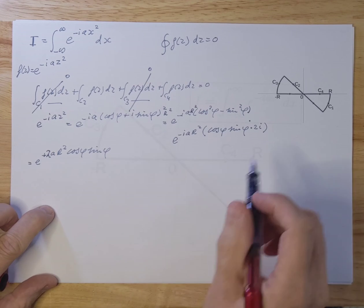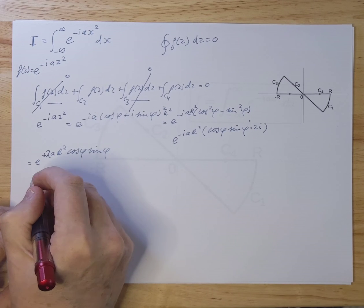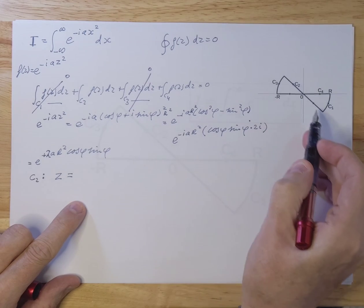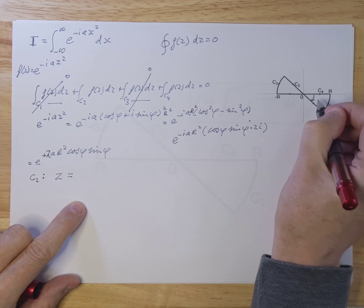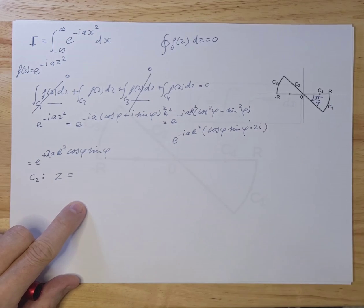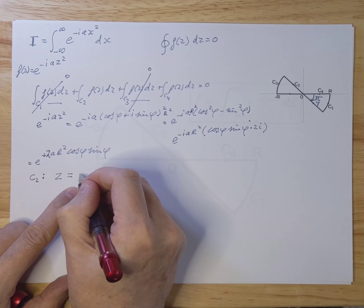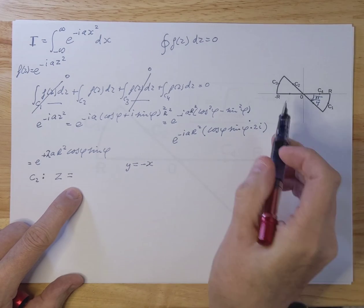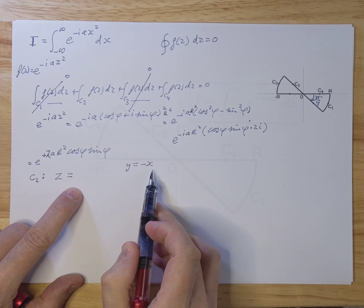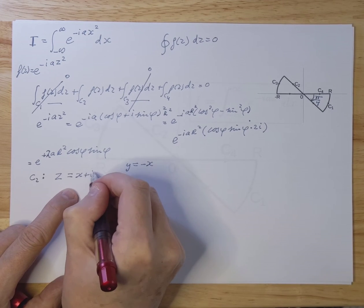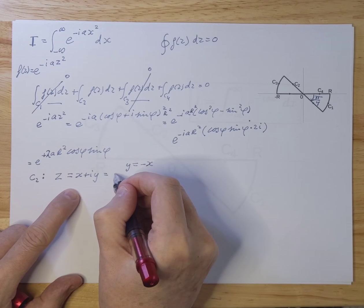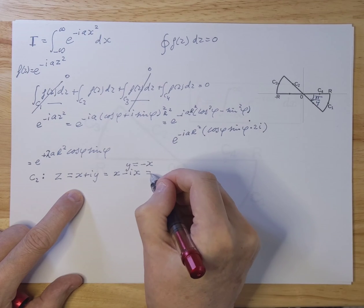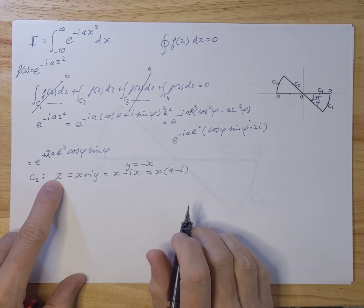Now let's focus on the c2 curve. For c2, this is a 45-degree angle, so this is π/4. Looking at this line, it's a y = −x type line, and since z = x + iy in the complex plane, this is nothing more than x − ix, so z = x(1 − i). That's what z is here along c2.